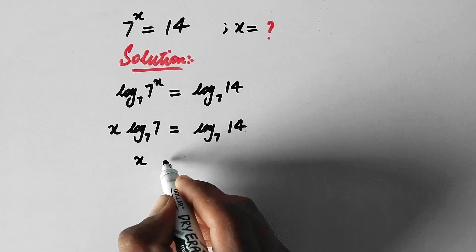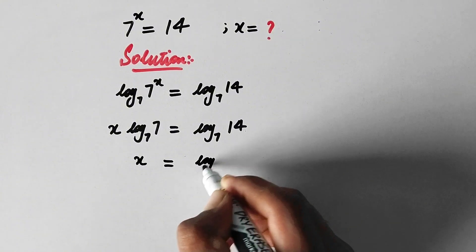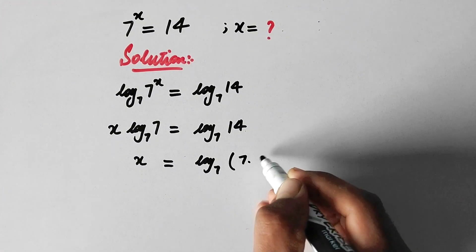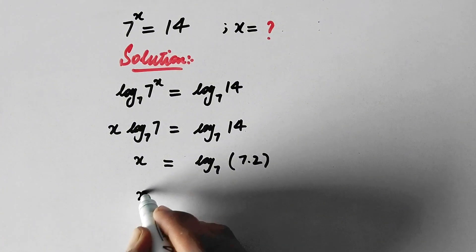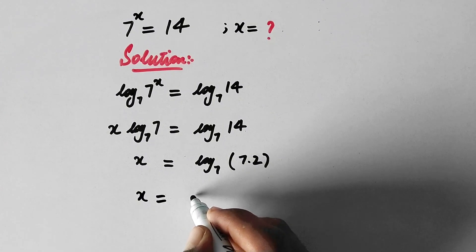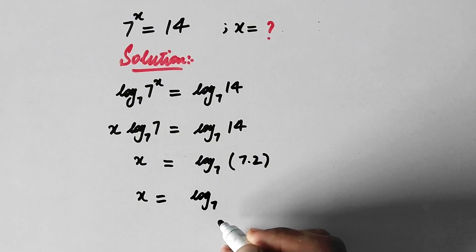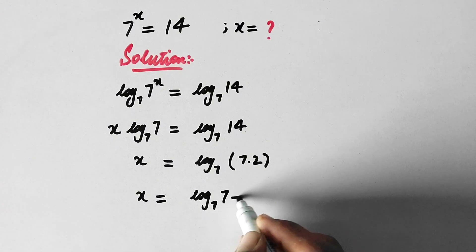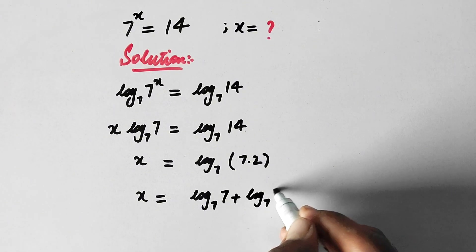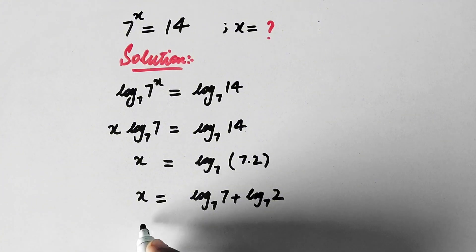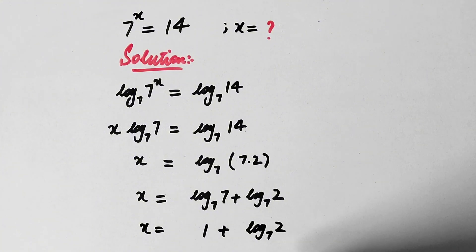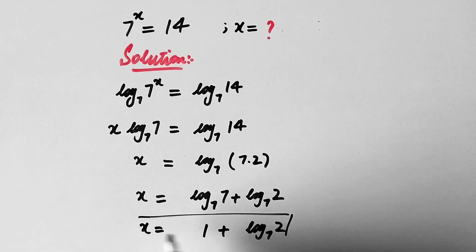So here x will be equal to log base 7 of 14, and since 14 is the same as 7 times 2, we can write x equal to log base 7 of 7 plus log base 7 of 2. Here, log base 7 of 7 equals 1, so x is equal to 1 plus log base 7 of 2, and that is the value of x.